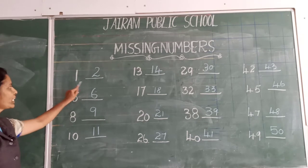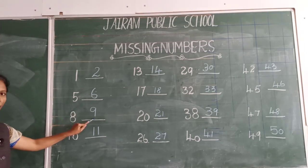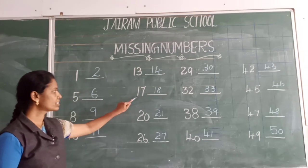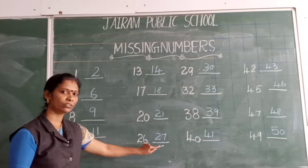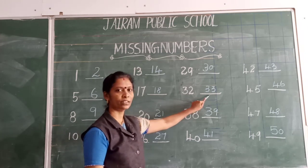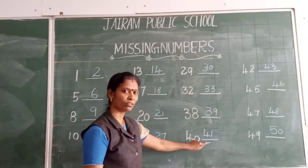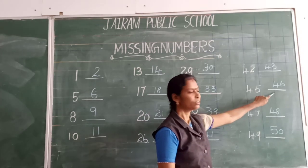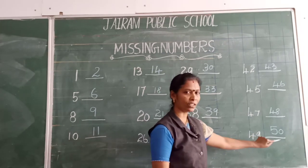Let us see one more time. 1 after 2. 5 after 6. 8 after 9. 10 after 11. 13 after 14. 17 after 18. 20 after 21. 26 after 27. 29 after 30. 32 after 33. 38 after 39. 40 after 41. 42 after 43. 45 after 46. 47 after 48. 49 after 50.